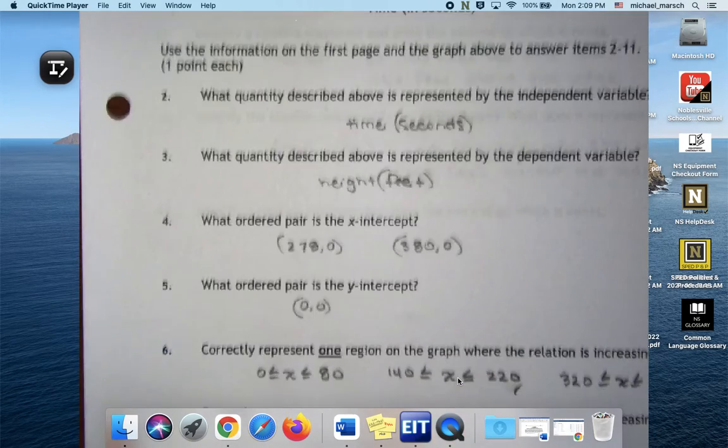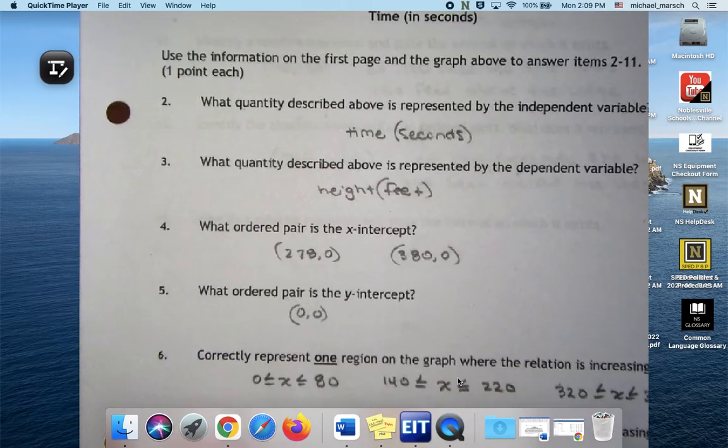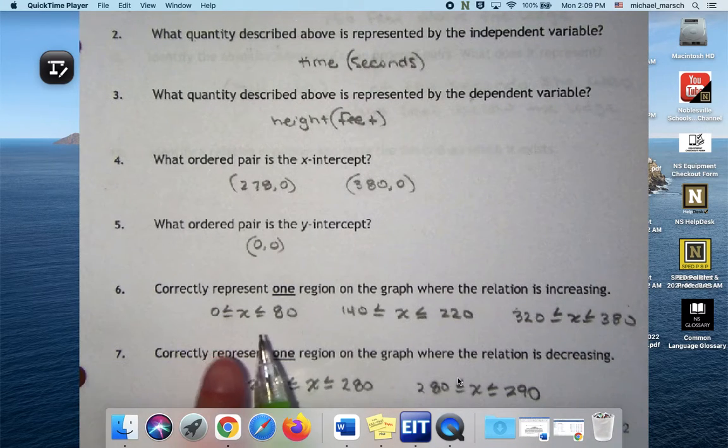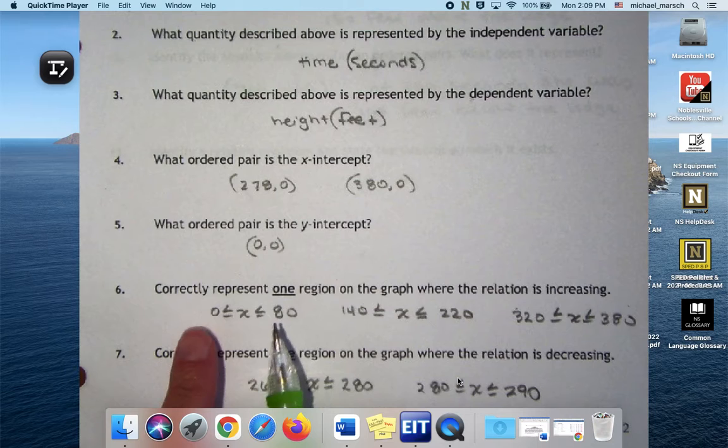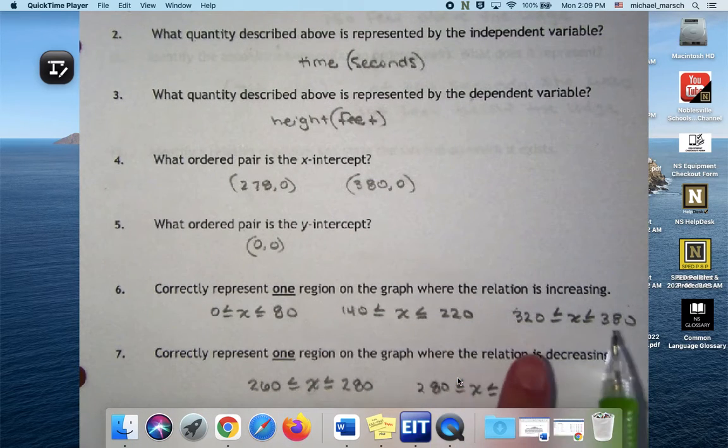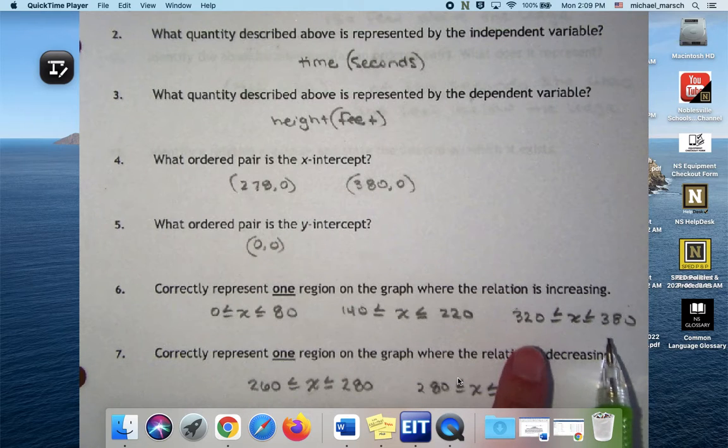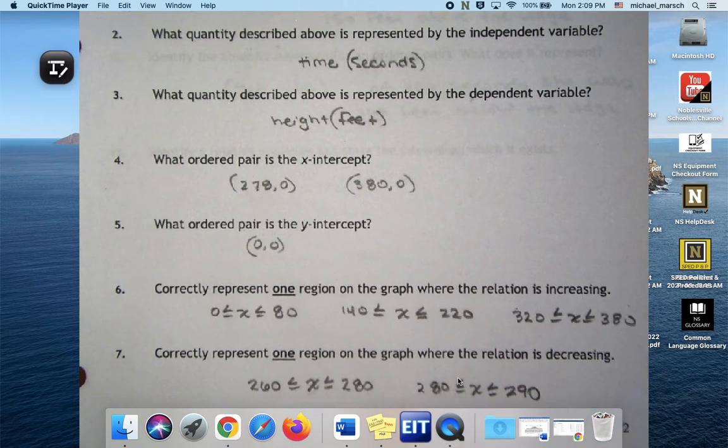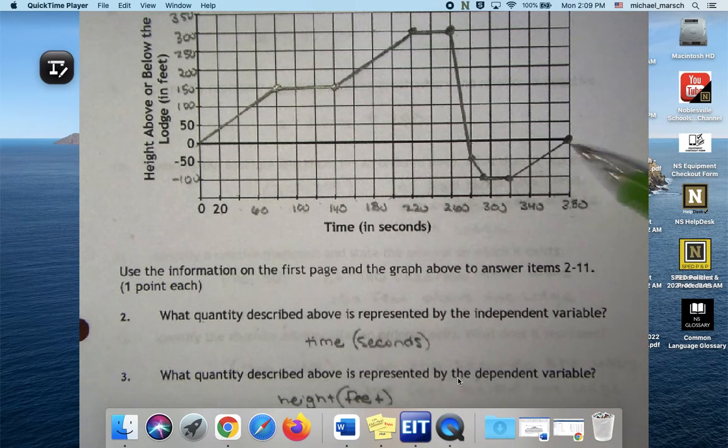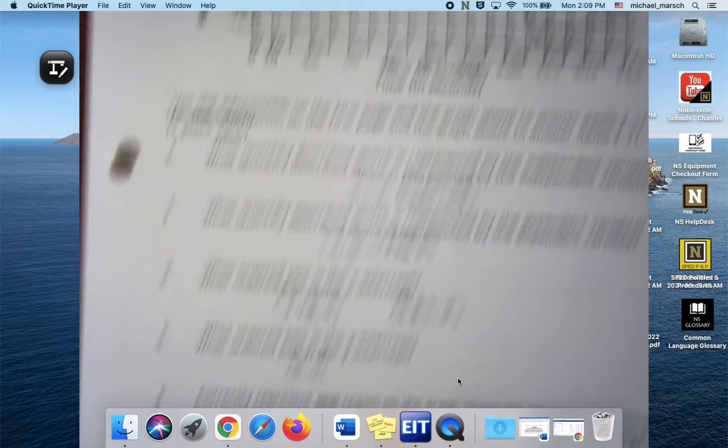Correctly represent one region on the graph where the relation is increasing. So I wrote down three different possibilities: it's increasing between 0 and 80, between 140 and 220, and between 320 and 380. That just means those are the ups, right? Any one of those could have been your answer, you don't have to have all three.